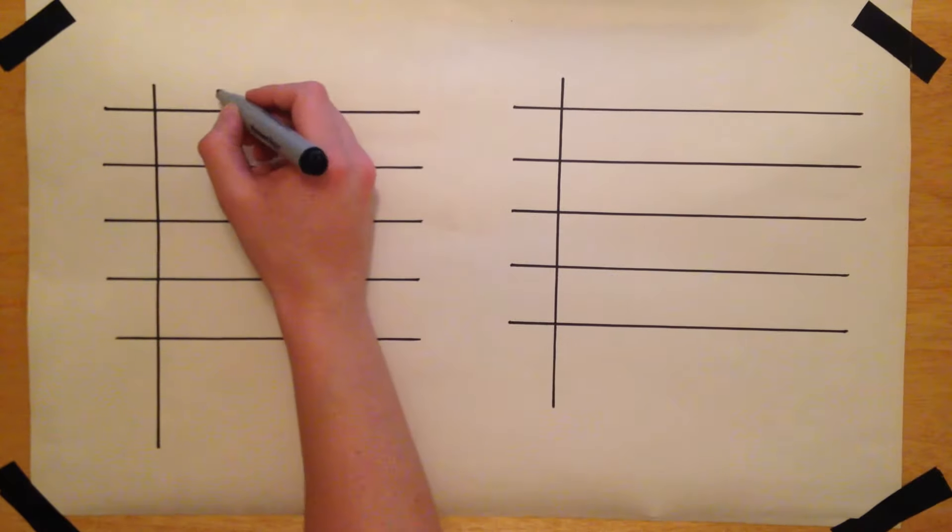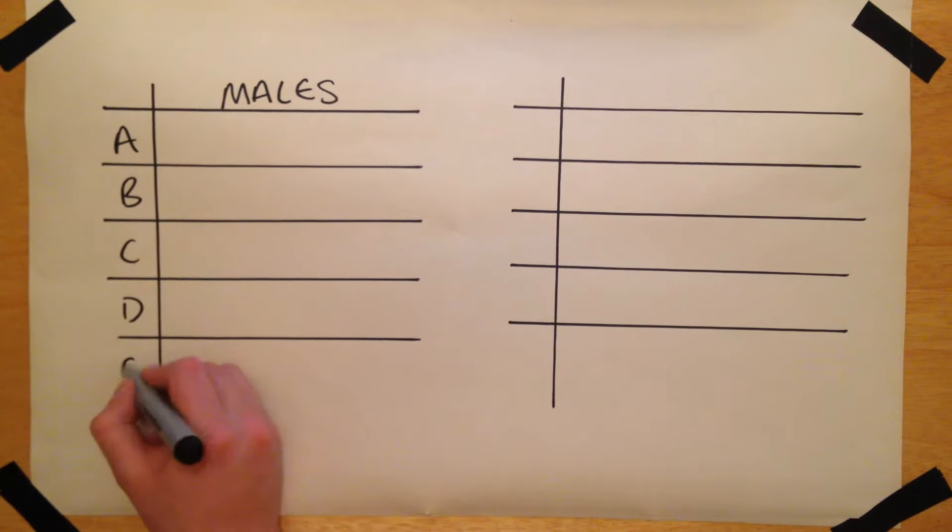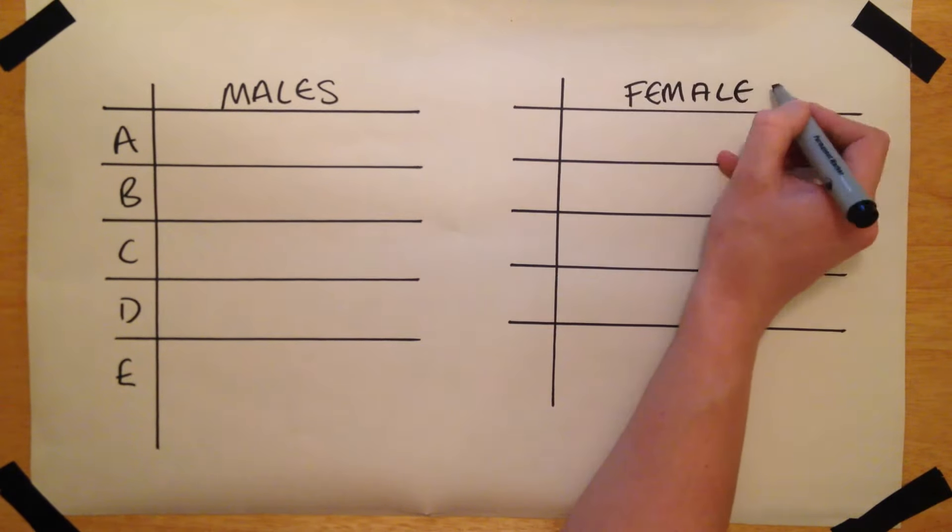We have two groups of people. The males, A, B, C, D, E, and the females, L, M, N, O, P.